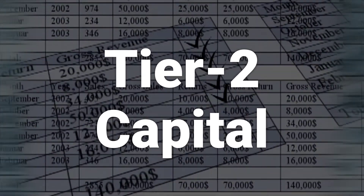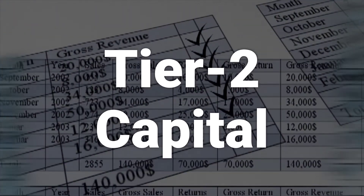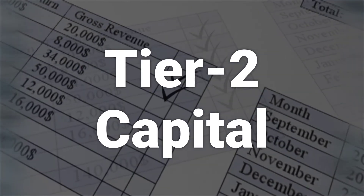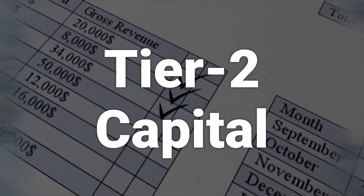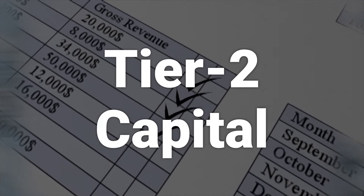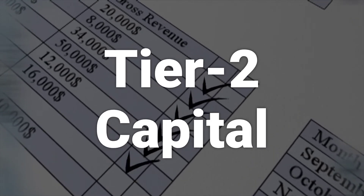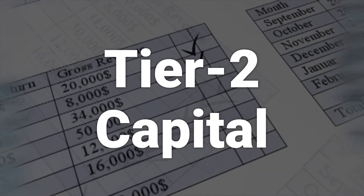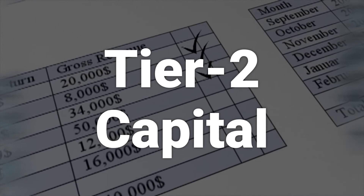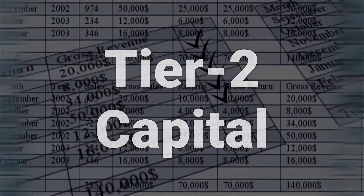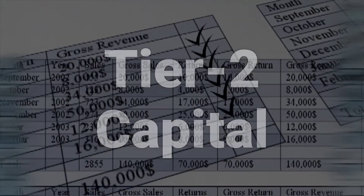Tier 2 Capital includes unaudited retained earnings, unaudited reserves, and general loss reserves. It provides a lesser degree of protection to depositors and creditors and is used when a bank loses all its Tier 1 capital.